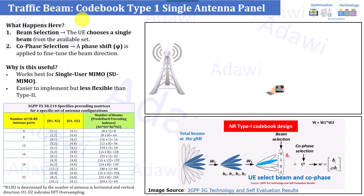First, what does 'code book' mean in this context? Under the context of CSI-RS — channel state information reference signal — a code book is a set of pre-coder or pre-coding matrices. Looking at this table, you can configure it from the network side. Based on your inputs, you define how many code blocks exist, and these define particular beams that the user can decode in the downlink direction by reading the CSI-RS and reporting back to the gNB the best pre-coding matrix.